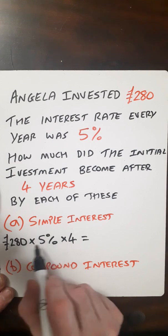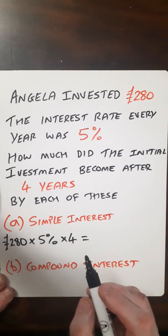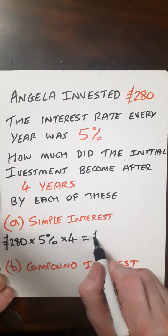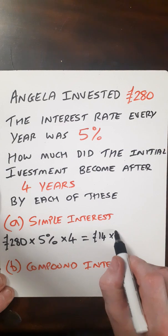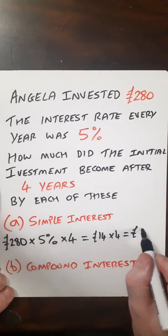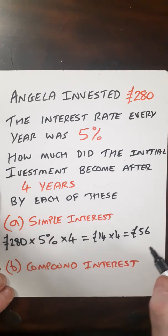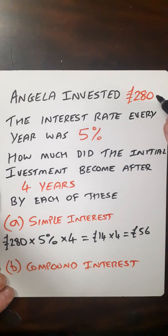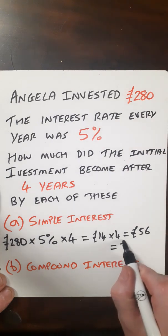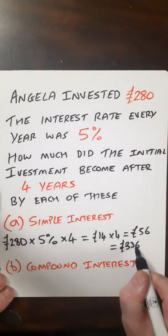Which is 4. 5% of £280, that would be £14, and then times that by four. So that equals £56 total interest. And we need to add that interest to the initial amount, so that becomes £336.